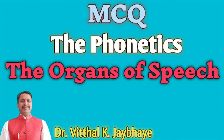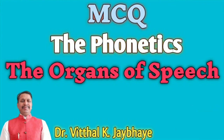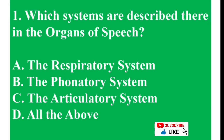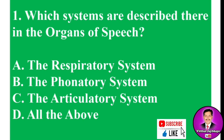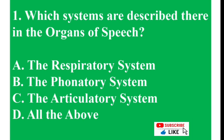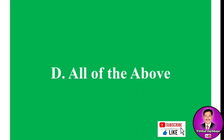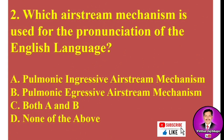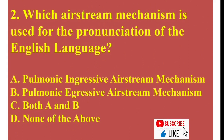MCQ number one: Which systems are described in the organs of speech? Options: A) the respiratory system, B) the phonatory system, C) the articulatory system, D) all of the above. The answer is D — all of the above. All three systems are covered.